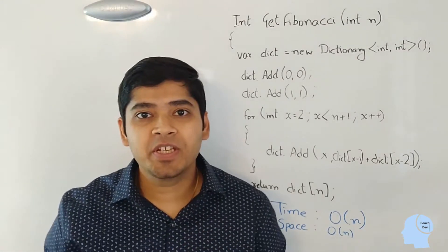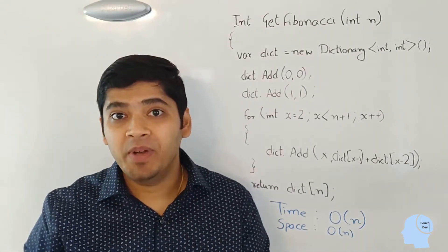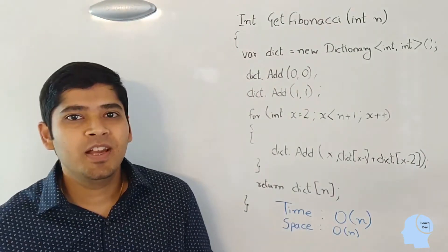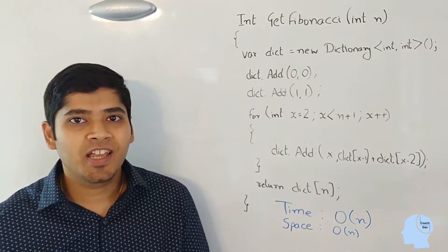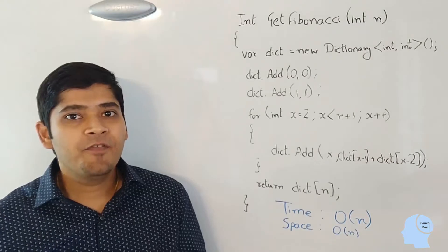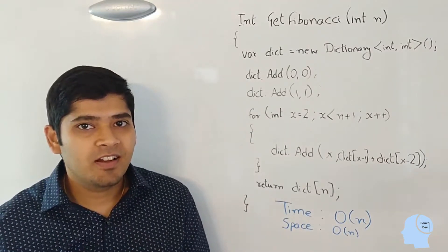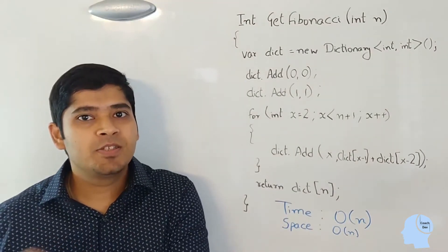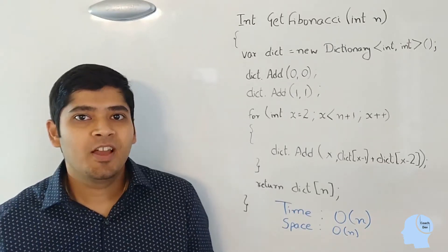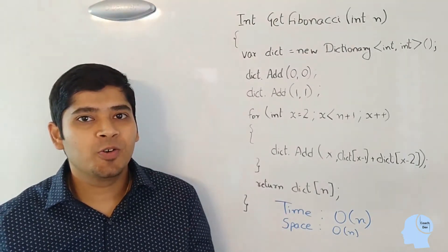So again, the next question will be, can we do better than this? So let's take a look at this solution again more closely. We are storing all the results from 0 to n. Do we really need all those results?